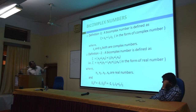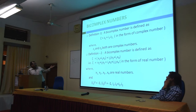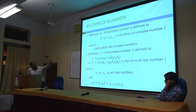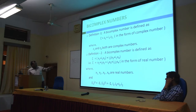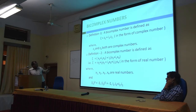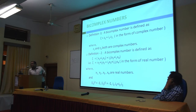We can also define the bi-complex number in terms of real numbers. Substituting z₁ = x₁ + i₁x₂ and z₂ = x₃ + i₁x₄, after solving we get ζ = x₁ + i₁x₂ + i₂x₃ + i₁i₂x₄, where x₁, x₂, x₃, x₄ are all real numbers. This number ζ is a four-dimensional number; we cannot represent it in ordinary space because it is four-dimensional.